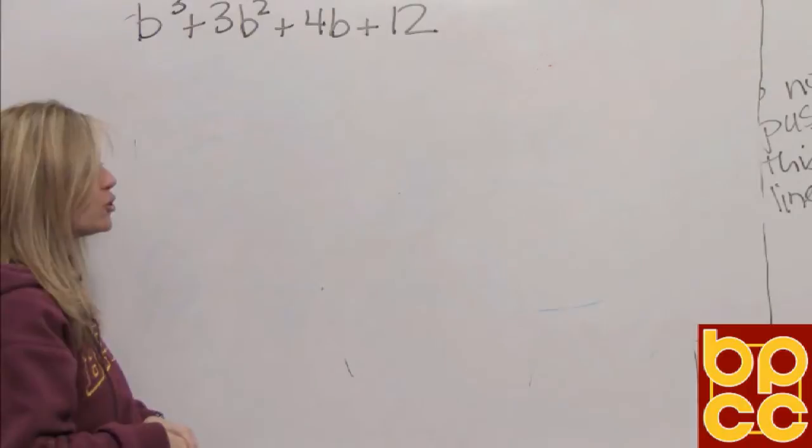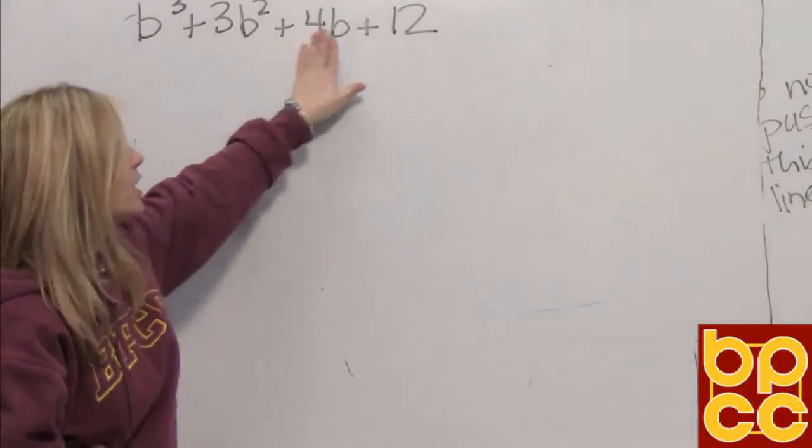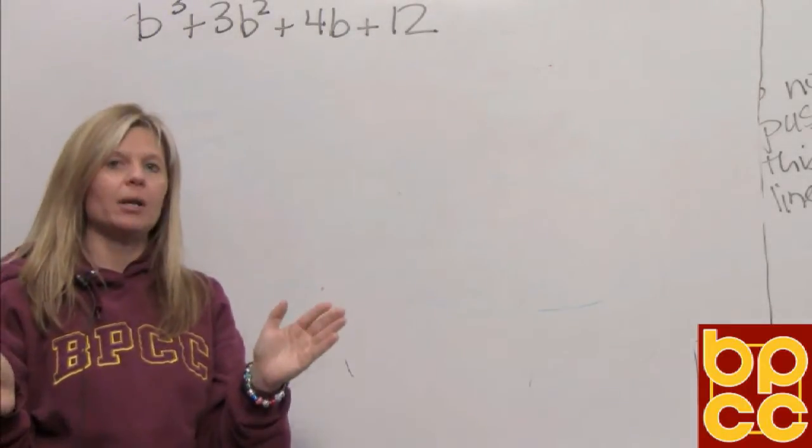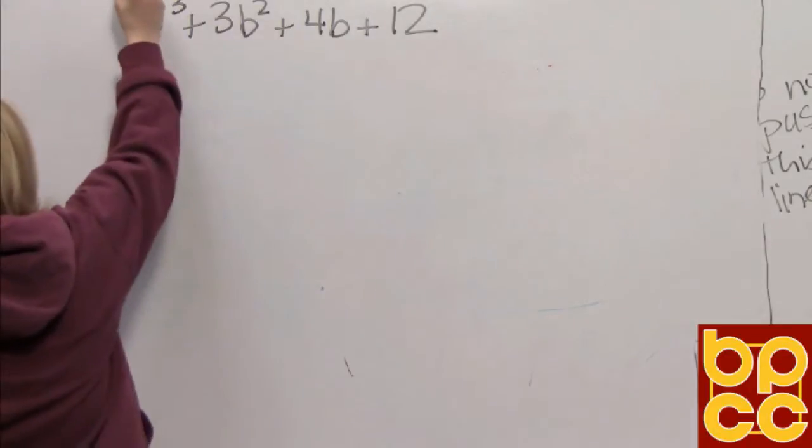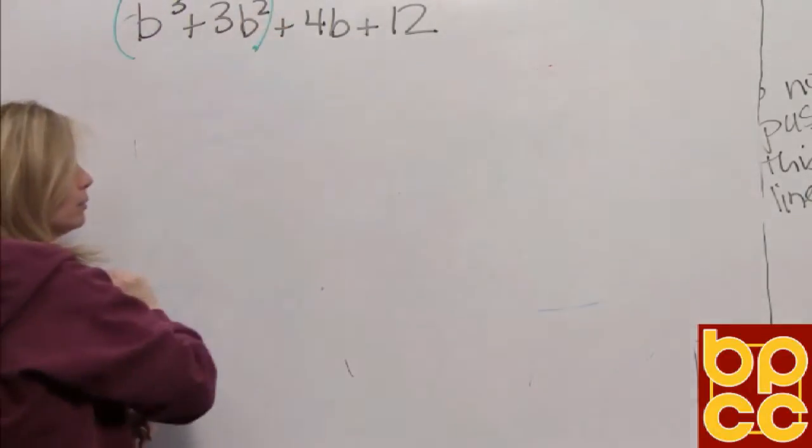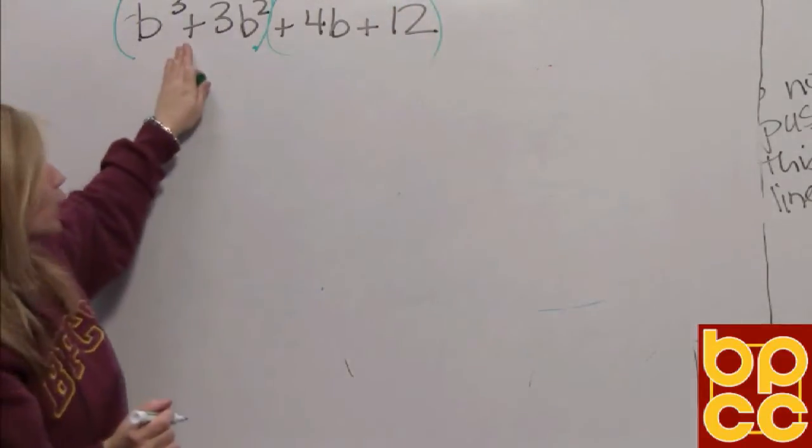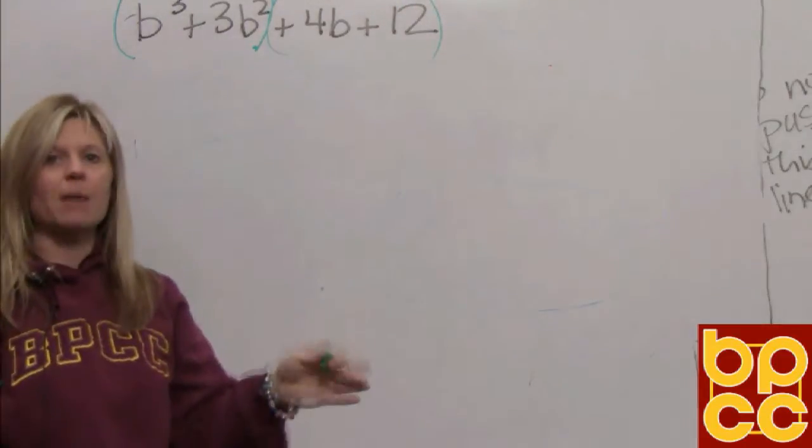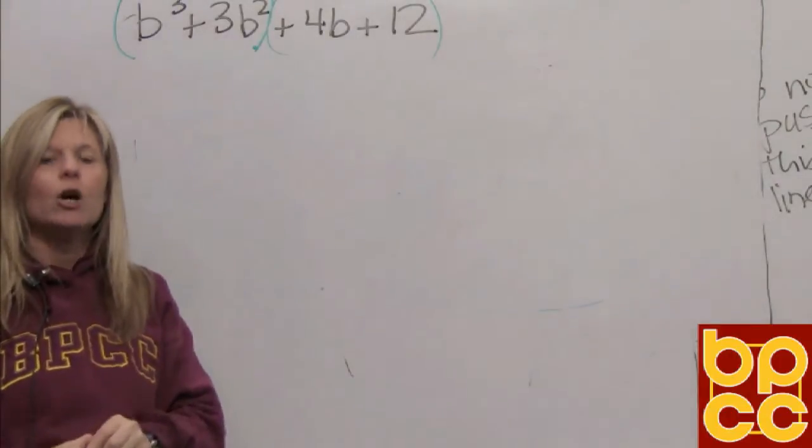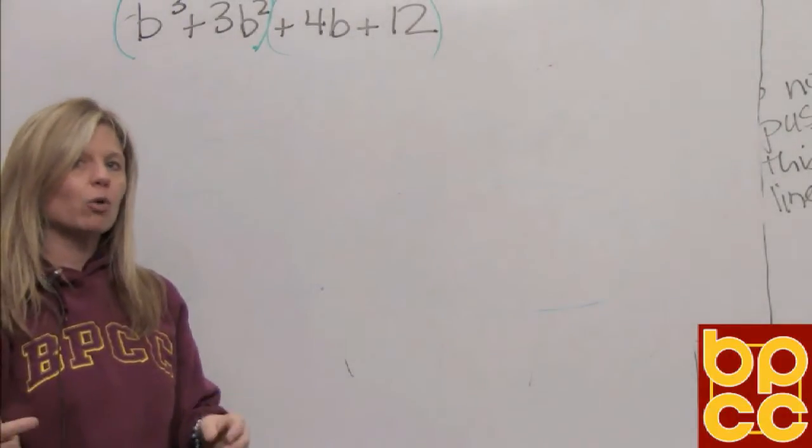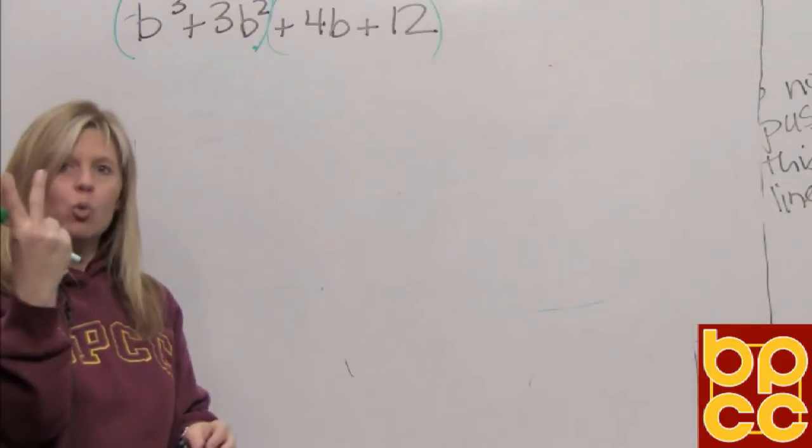And that's what you're about to do. If all four of these terms do not have something in common, let's break them into smaller groups. Let's group them 2 by 2. And then look at those smaller groups to see if we have something in common, a GCF. So really, by doing grouping, we're going to do the GCF rule twice.